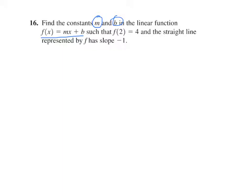And then the given information is that we know f of 2 is 4, and we know the slope is negative 1. So hopefully you'll remember that m is actually the slope. So they're telling us that m equals negative 1.